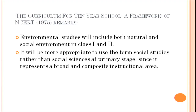The NCERT framework of 1975, 'Curriculum for 10-Year School: A Framework,' states that environmental studies will include both natural and social environment in classes 1 and 2 — as EVS today. It also noted that it is more appropriate to use the term 'social studies' rather than 'social sciences' at the primary stage, since it represents a broad and composite instructional area giving students simplified knowledge about the society in which they live.